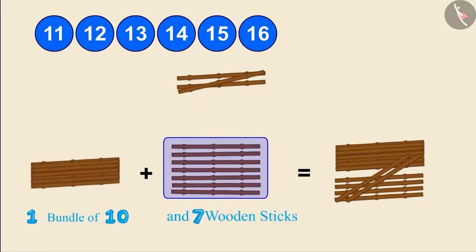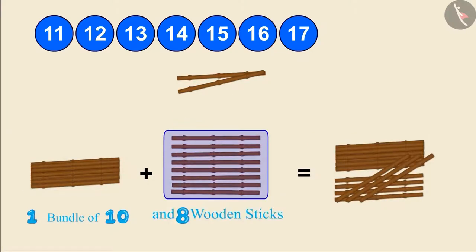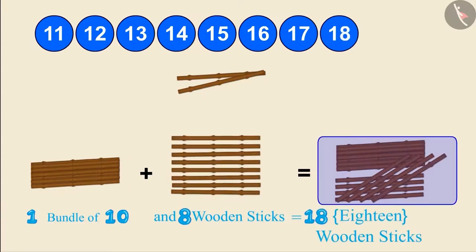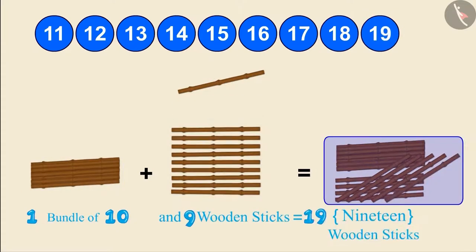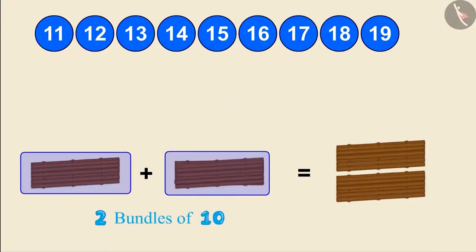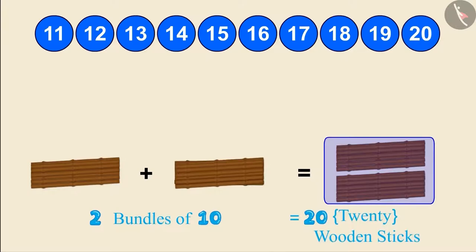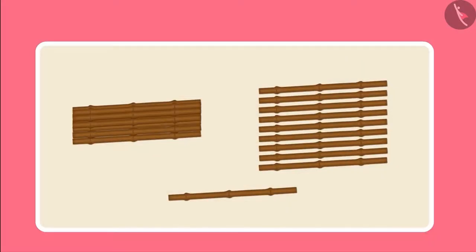One bundle of 10 and 7 wooden sticks make 17 wooden sticks. 1 bundle of 10 and 8 wooden sticks make 18 wooden sticks. 1 bundle of 10 and 9 wooden sticks make 19 wooden sticks. And 1 bundle of 10 and 10 more wooden sticks make 2 bundles of 10 and that makes 20 wooden sticks.